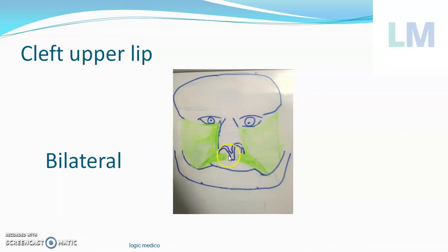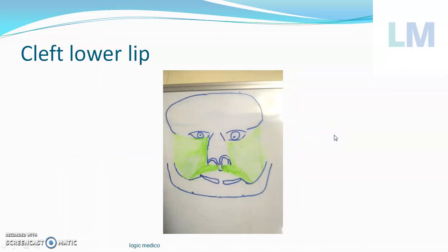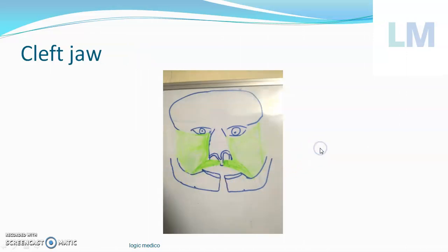Cleft in the lower lip is extremely rare. The lower lip is formed by mandibular processes; when the upper portions of the mandibular processes do not unite with one another, there is a cleft in the lower lip. When the two mandibular processes completely fail to fuse, this causes not only a cleft in the lower lip but also a cleft in the lower jaw — called cleft jaw. The embryo appears like a three-jawed animal. This is extremely rare but possible.